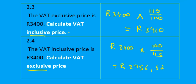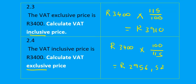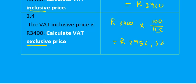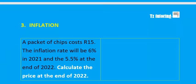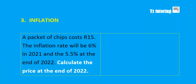To summarise the VAT rules: if you must calculate the VAT-inclusive price, multiply by 115/100. If you must calculate the VAT-exclusive price, multiply by 100/115. Now let's move on to inflation — the general increase in prices.